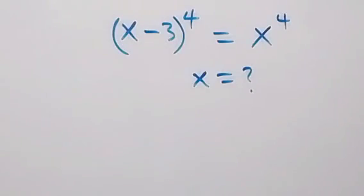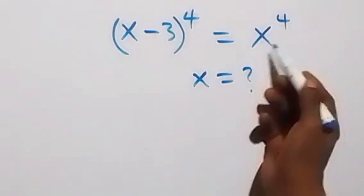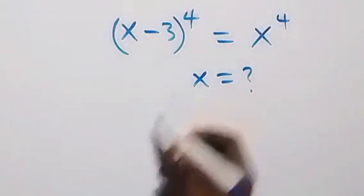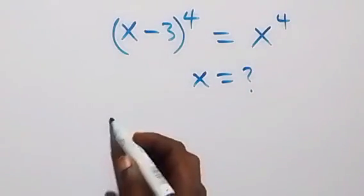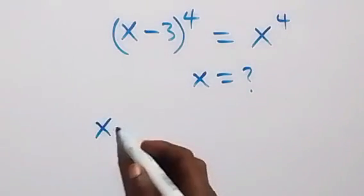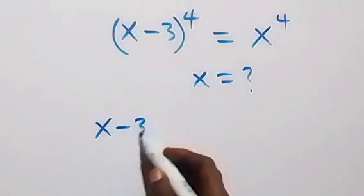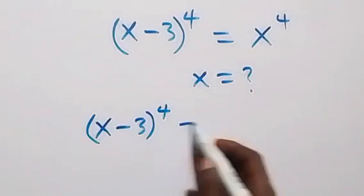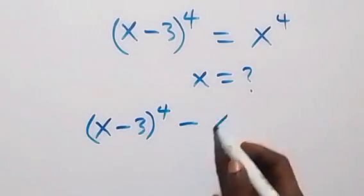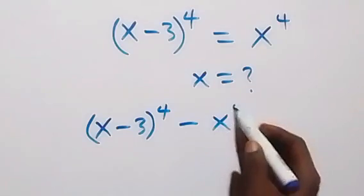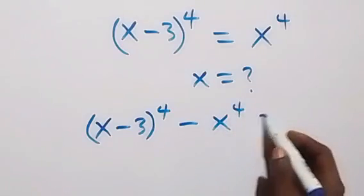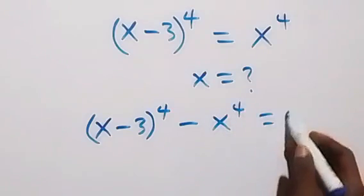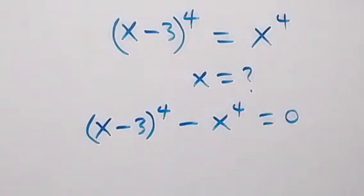Let's take what is on this side to this side. Then we have x minus 3, raised to the power 4, then minus x raised to the power 4 equals to 0.